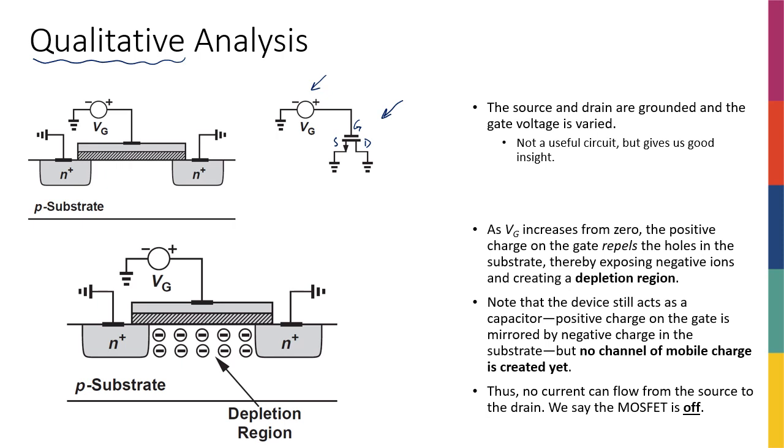As I mentioned before, from the cross-section point of view, it looks like this. So drain and source are connected to ground, as you can see, and the gate here is connected to some VG.